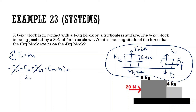Force applied is 20, M1 is 6 and M2 is 4 — total 10. So 20 = 10a, giving acceleration of 2 m/s².